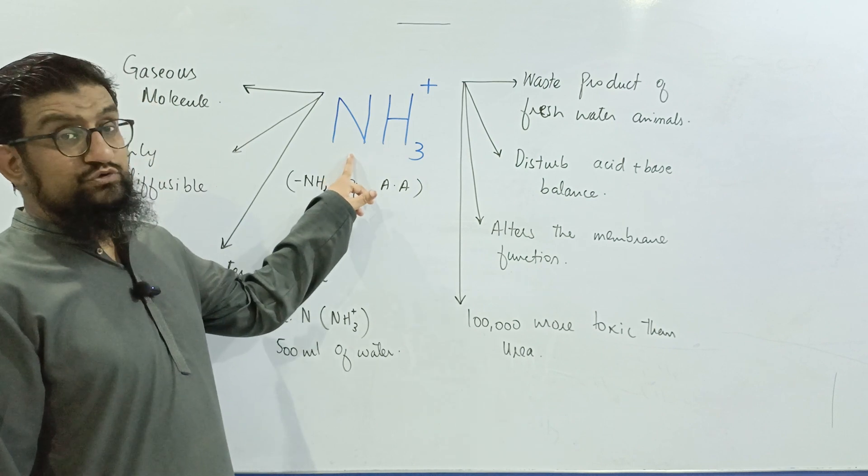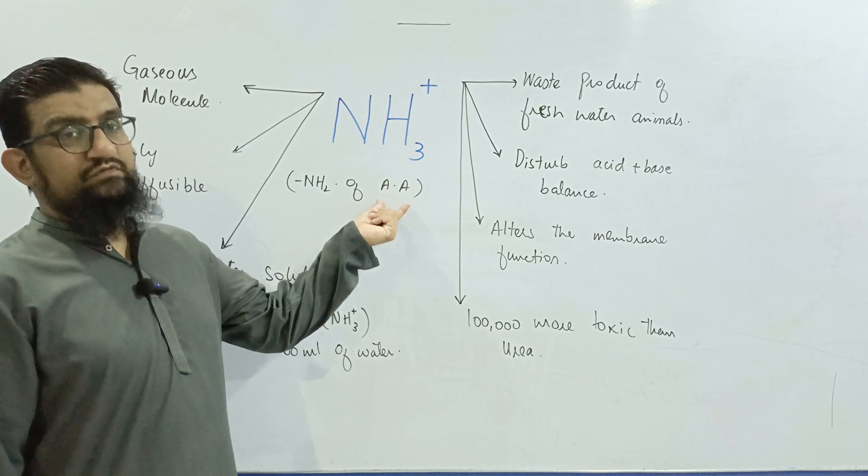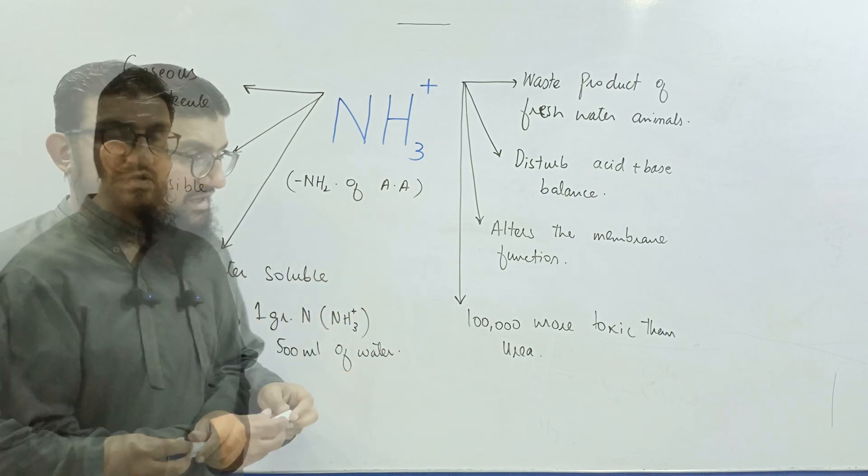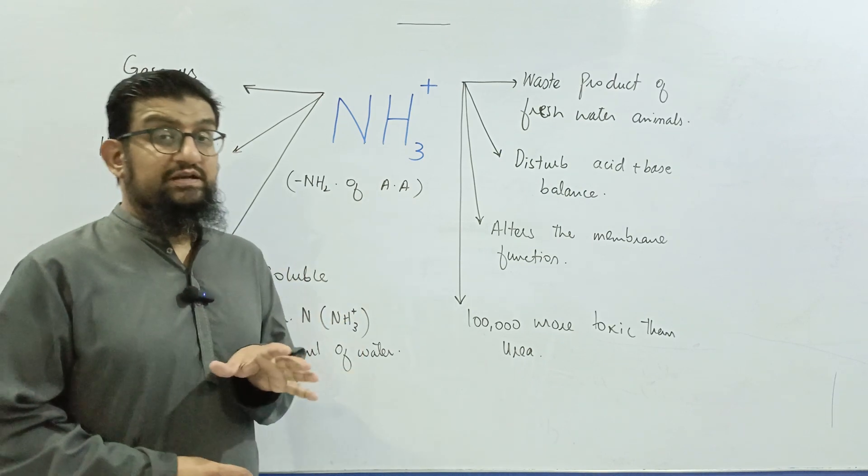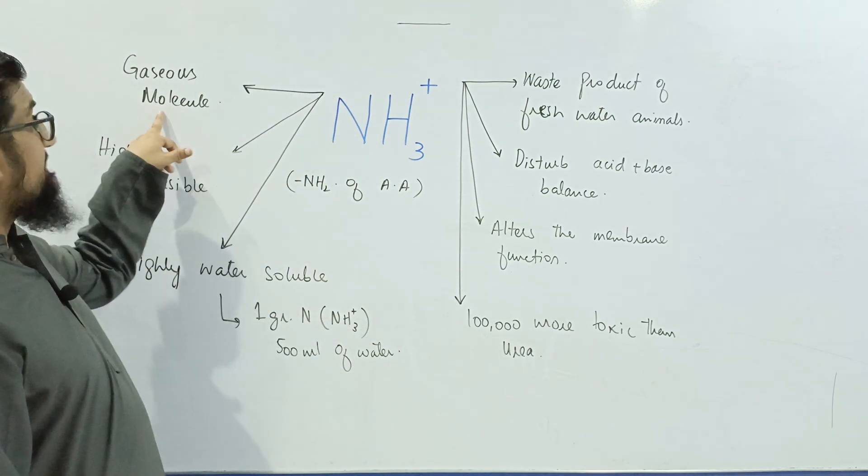First thing, ammonia is produced by the metabolism of amino group of amino acids which are the parts of the protein. Now ammonia is the most toxic nitrogenous waste because of some features. Ammonia is a gaseous molecule.